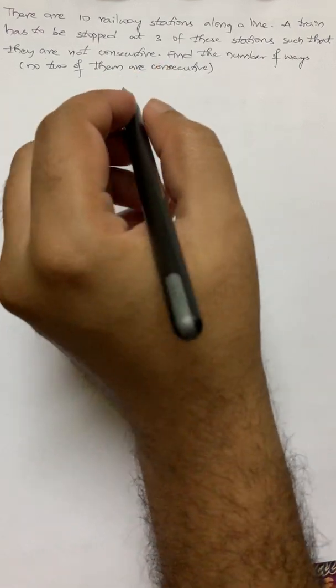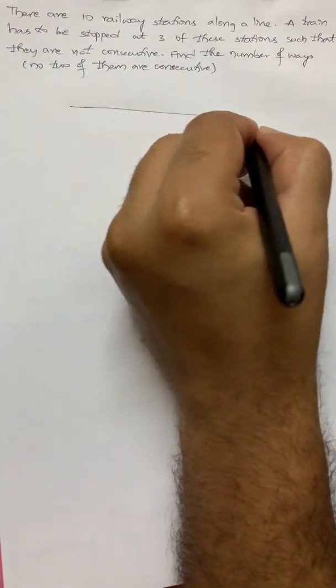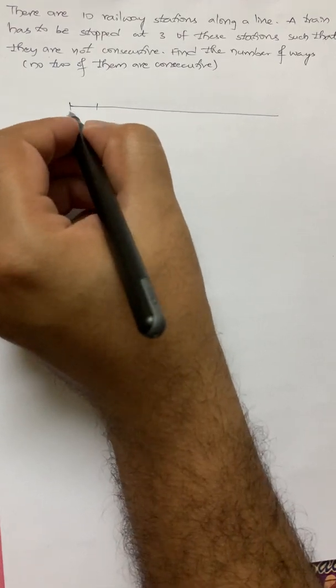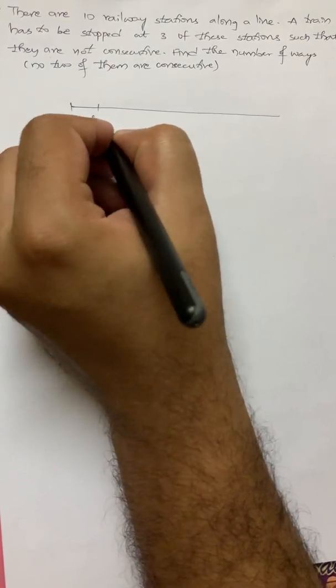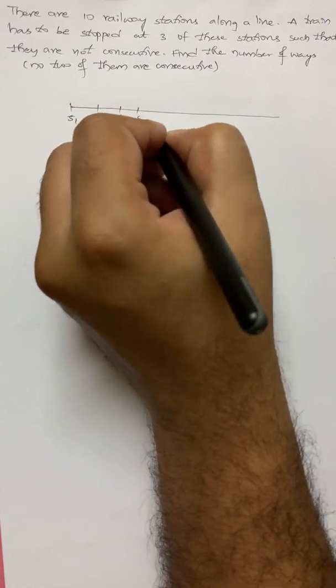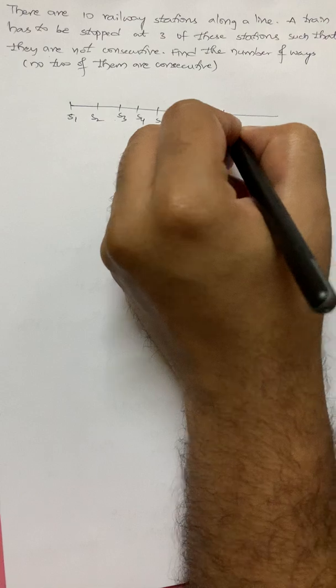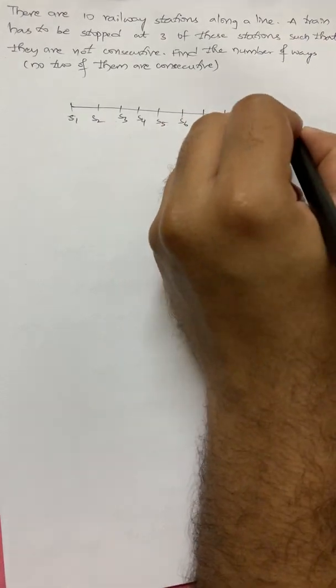There are 10 railway stations along a line. Let us say this line. This station 1, S1, S2, S3, S4, S5, S6, S7, S8, S9, S10.